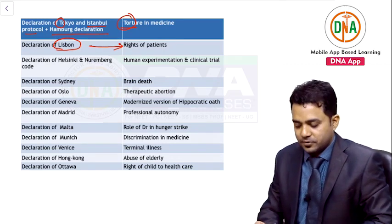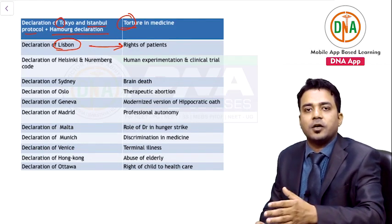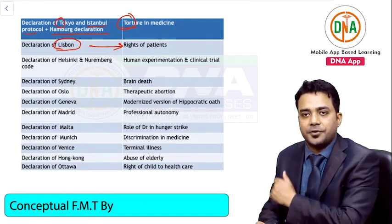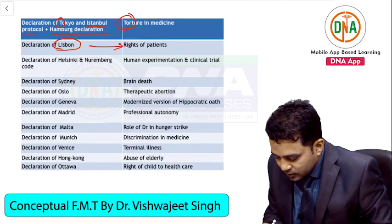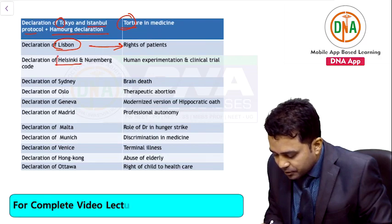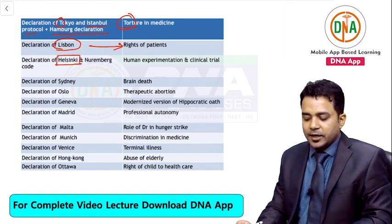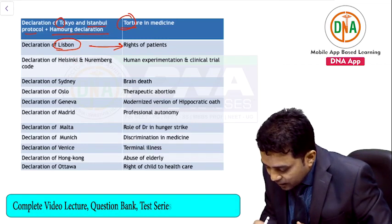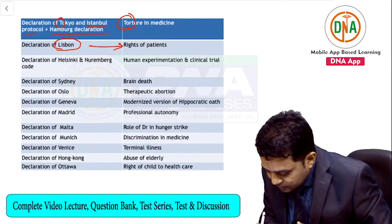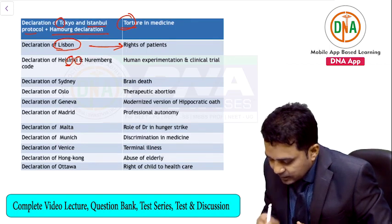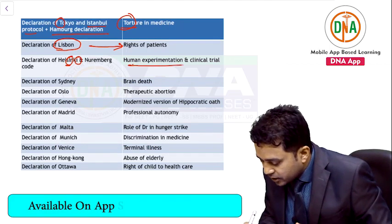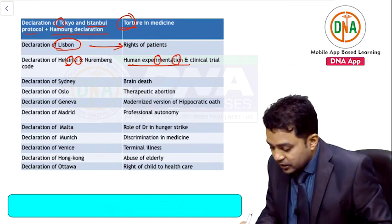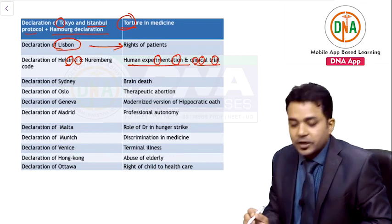The Declaration of Lisbon deals with rights of the patient — every person, whether normal or insane, has the right to be treated. Third is the Declaration of Helsinki — an all-time repeat question. Remember: Helsinki has many letter 'I's, and this deals with human experimentation and clinical trials.